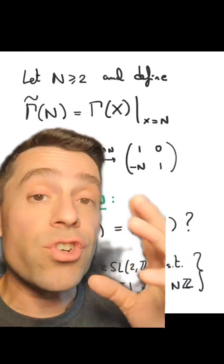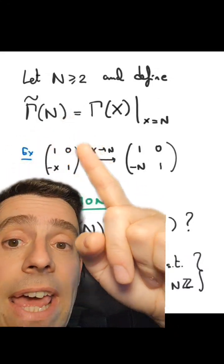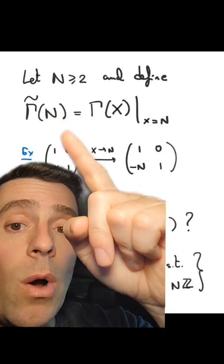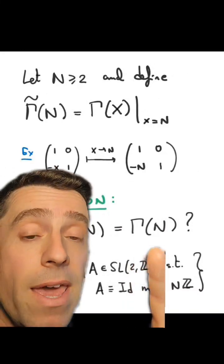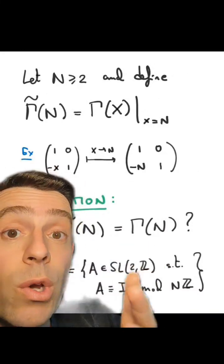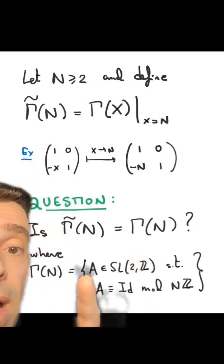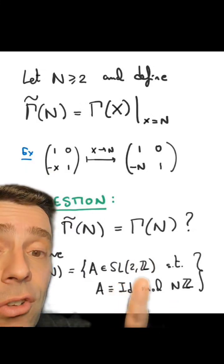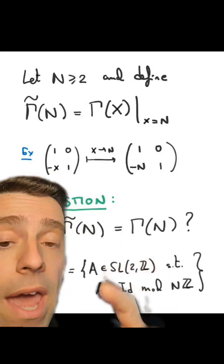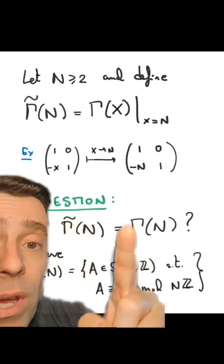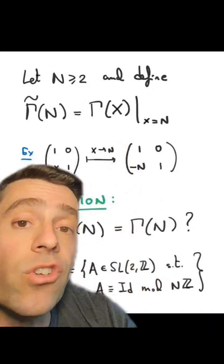And the research-level question is the following: is gamma-tilde of n equal to the usual gamma(n)? Gamma(n) is what we call the congruence subgroup modulo n — matrices in SL2(Z) that are the identity modulo n. The question is whether we get all of them by evaluating gamma(x) at x equals n.